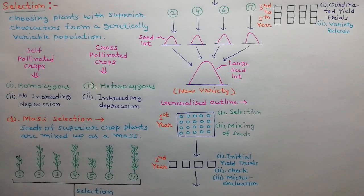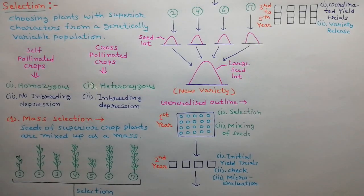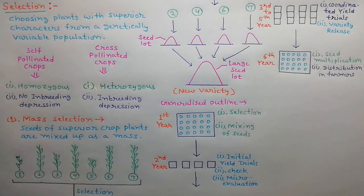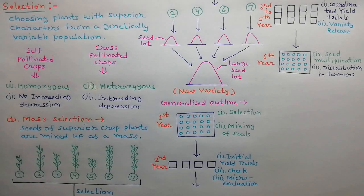In the third to fifth year, coordinated yield trials are organized for selected populations that are superior to check varieties. If the selected population is found superior in all characters, it is released as a new variety. In the sixth year, seeds of the newly released variety are multiplied and distributed to farmers.